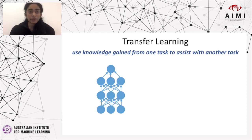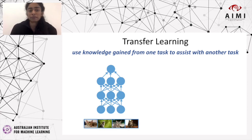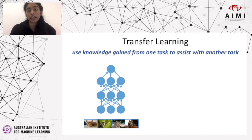For example, say that we want to design a classifier to identify if an image has an elephant, but our available dataset is extremely small. What we could do instead is train a model on a larger image dataset consisting of cats. Although cats are very different from elephants, the model will be able to learn the basic features that characterize natural images.